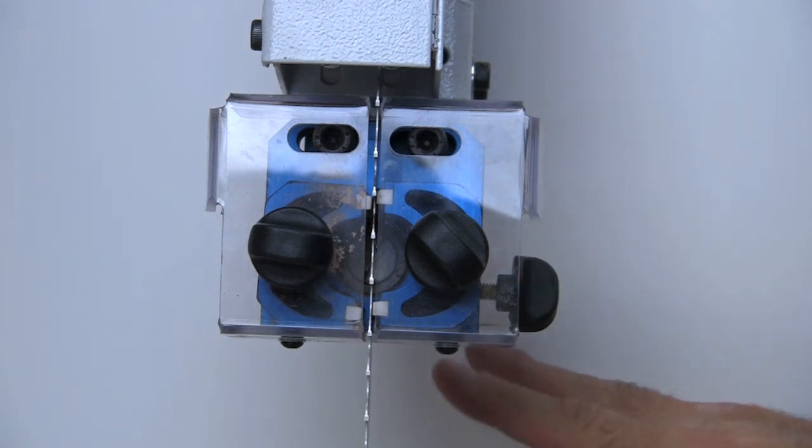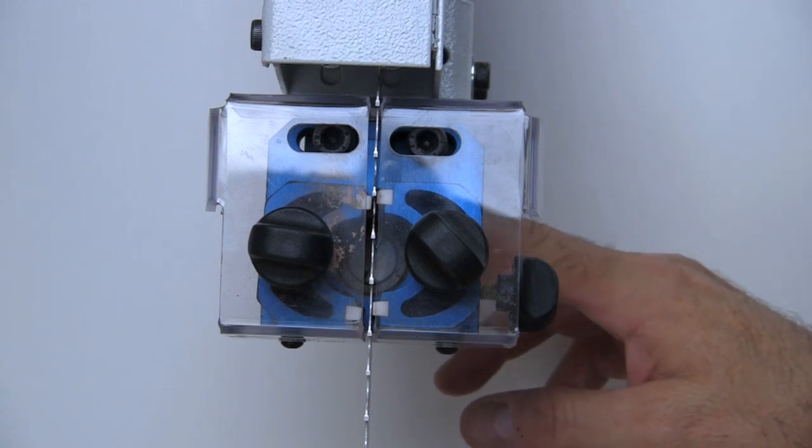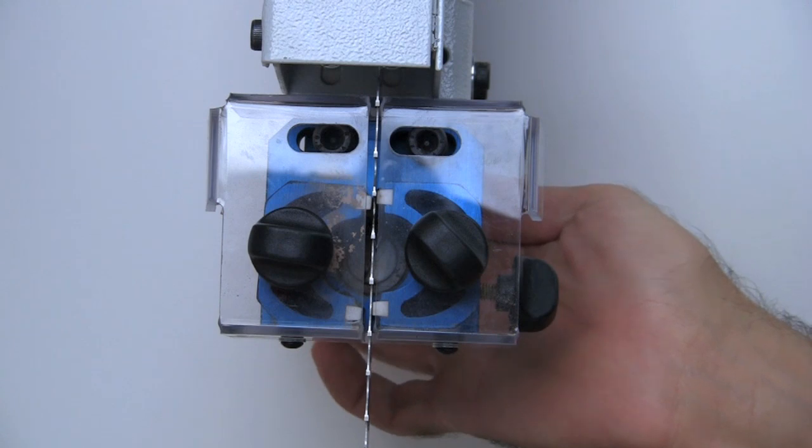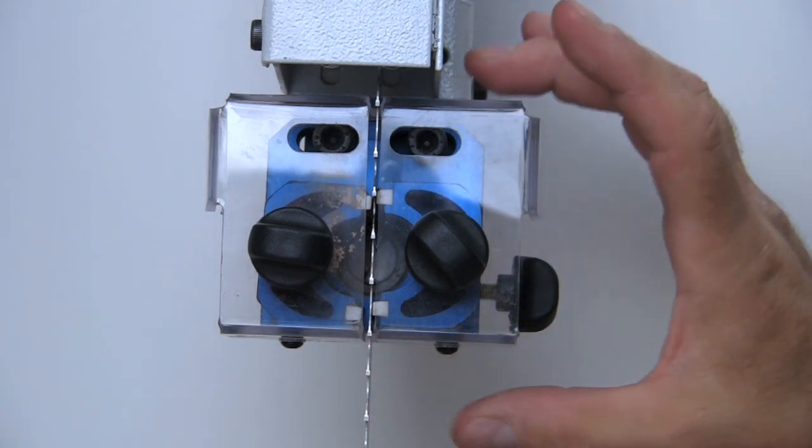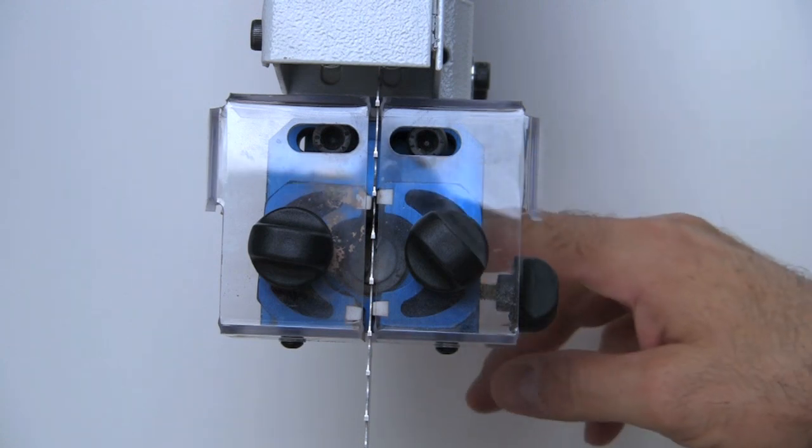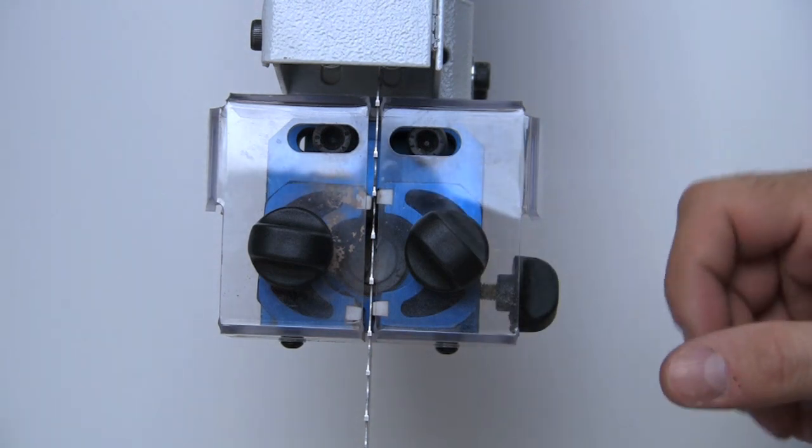If you did need to, there are two cap screws back here that you can't see on the camera. You would just loosen those and then this entire plate assembly that holds this can be advanced or retracted. So you can do that until you get it to the right position, tighten those back up, and then continue where we're going to start.